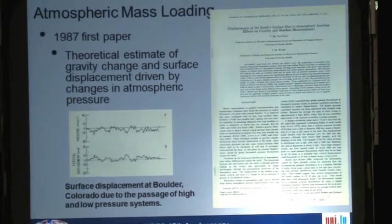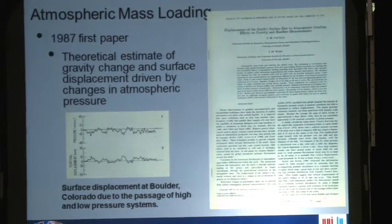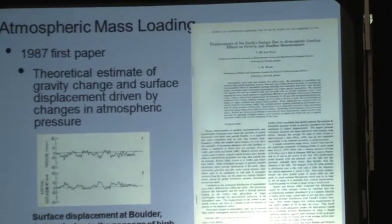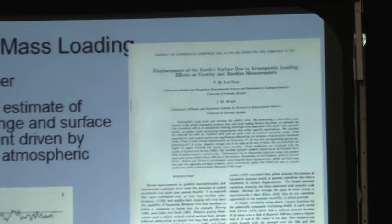The first project we worked on was to decide how big are the surface displacements caused by the passage of high and low pressure systems — so 20 millibars or so can make the ground go up by a couple of centimeters. This is my first publication with John. It's CERES publication 1214, and the paper came out in 1987. It was a theoretical estimate of the gravity change and surface displacements driven by changes in atmospheric pressure.